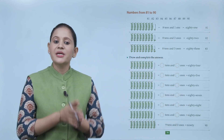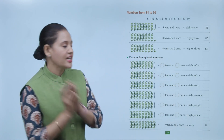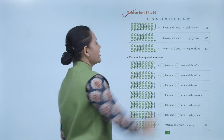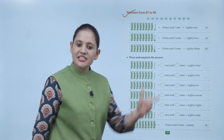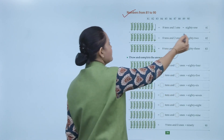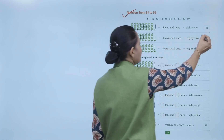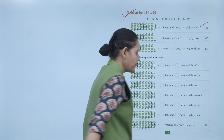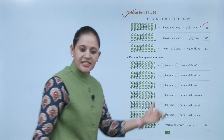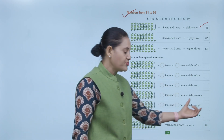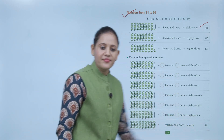Numbers from 81 to 90. 81 means 8 tens and 1 one — spelled E-I-G-H-T-Y O-N-E, written as 8-1, which is 81. Like this we will write numbers up to 89.